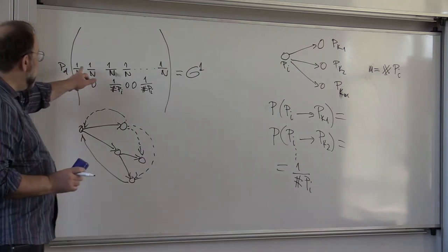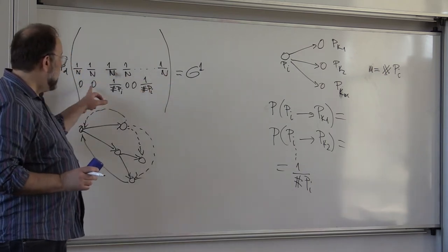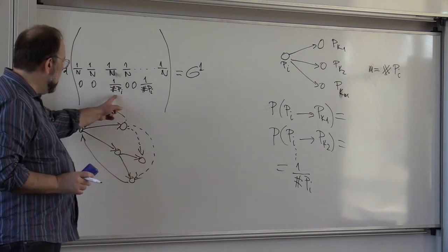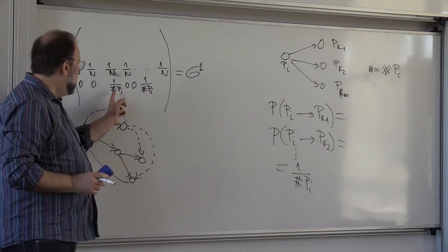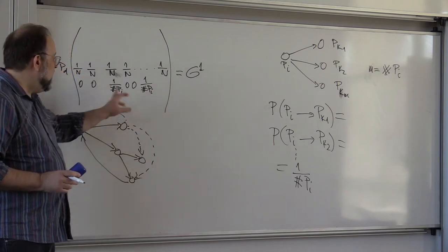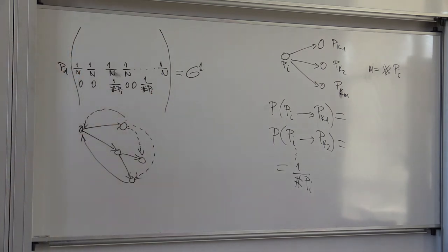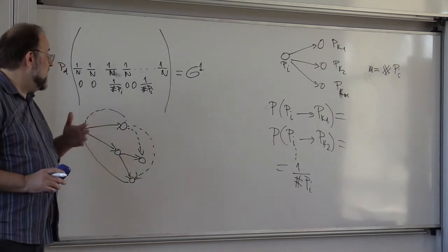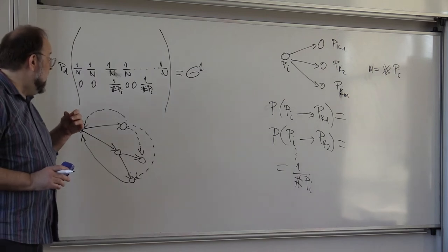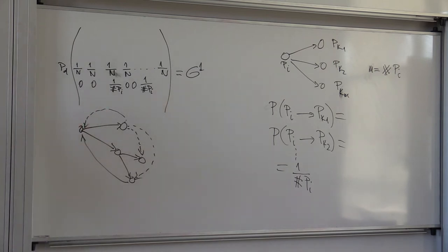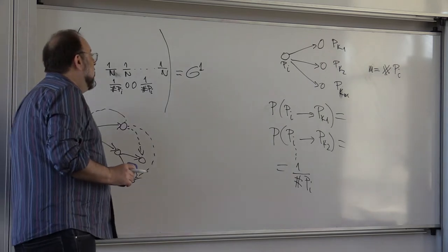Here a row sums to 1, here to 1, and of course here also to 1, because the entries are equal and equal to 1 over the number of non-zero entries, so this sums to 1. These matrices are called stochastic matrices; they are extremely important, have lots of applications, and have nice properties with respect to the structure of their eigenvalues. We will talk about that later.